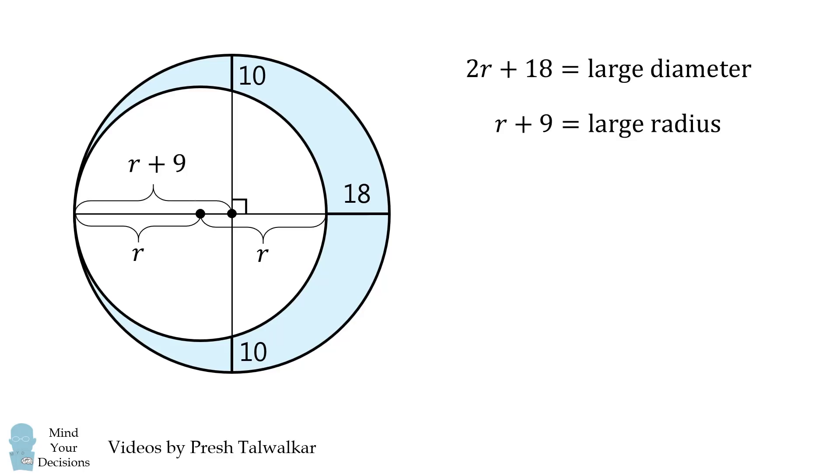So this distance will be R plus 9. That means the two circles have a distance of 9 between their centers. Now since the large radius is R plus 9, this distance will also be R plus 9.